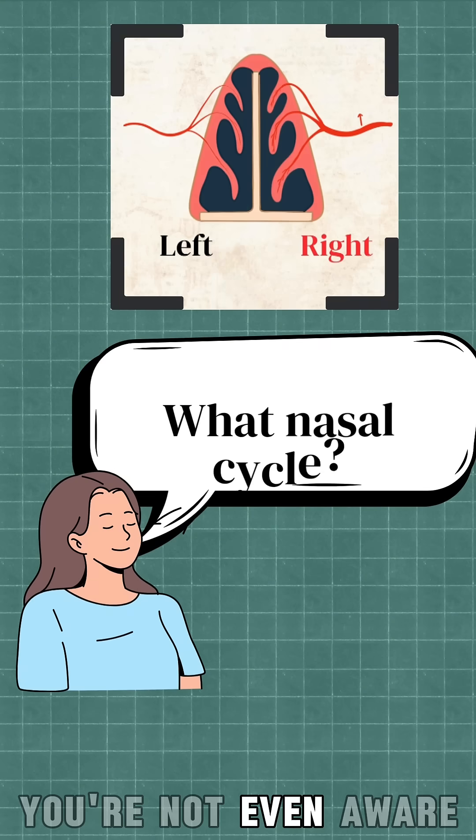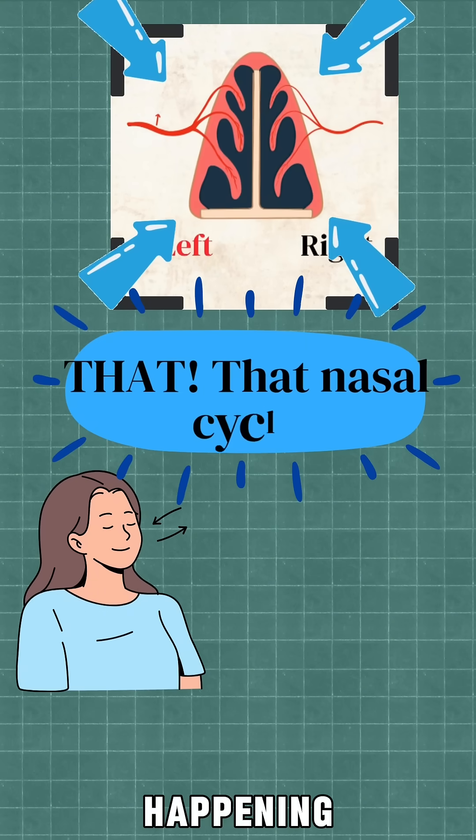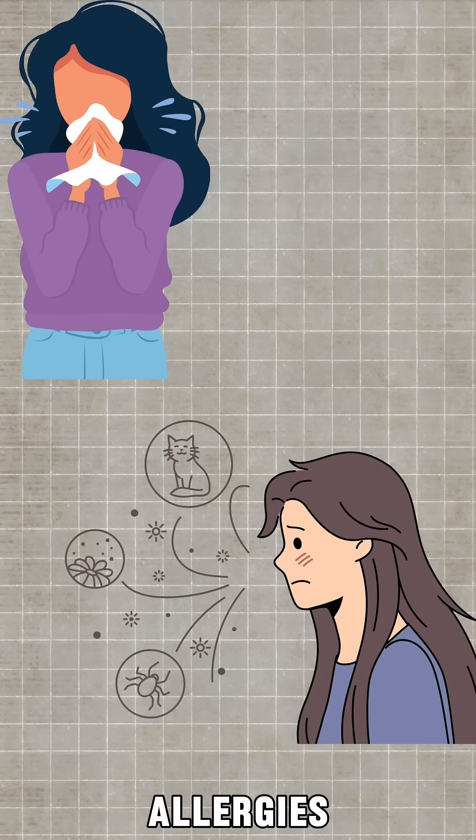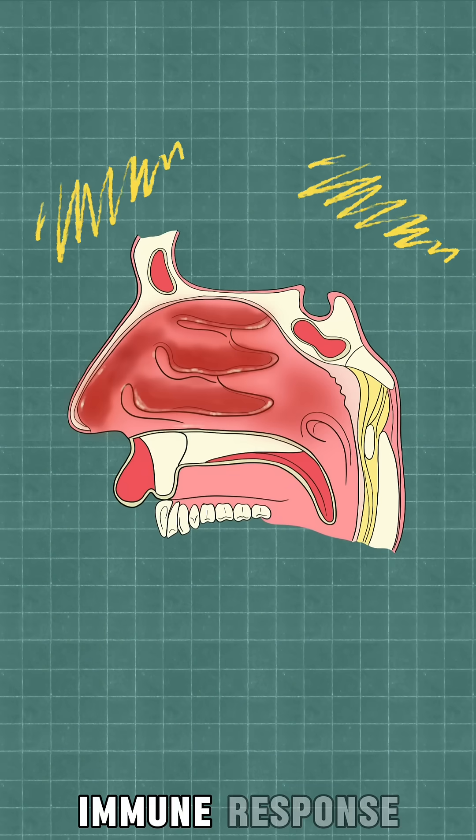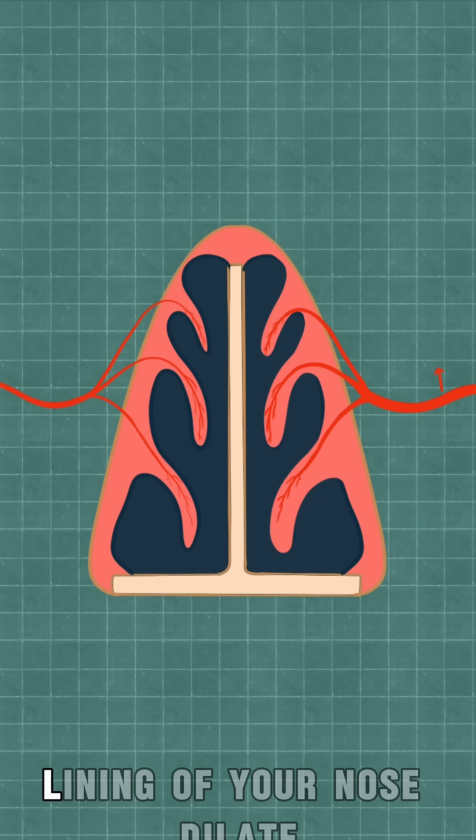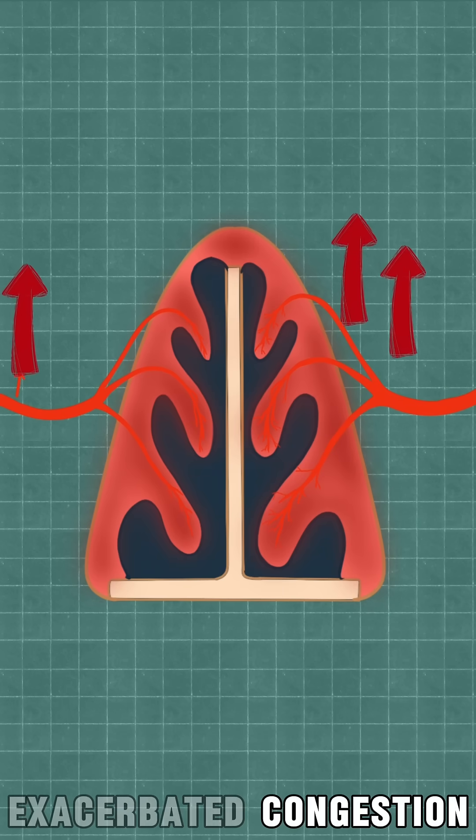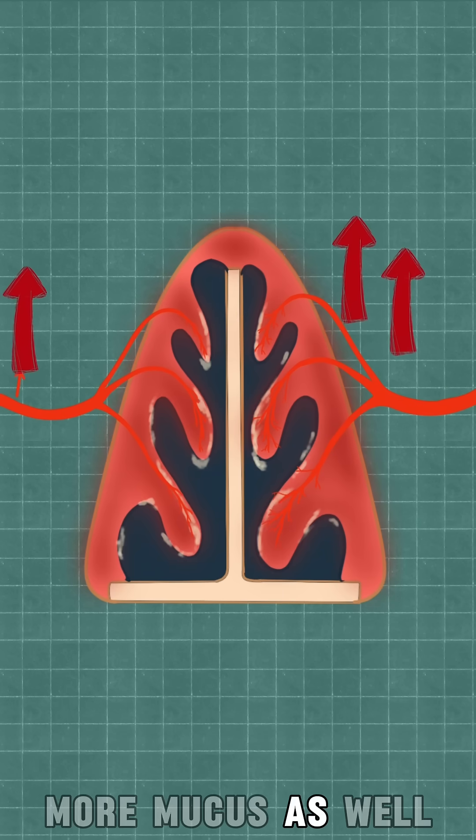Normally you're not even aware of the nasal cycle happening, but when you have a cold or allergies, your nasal tissues become inflamed due to an immune response. The blood vessels in the lining of your nose dilate, resulting in exacerbated congestion, and you produce more mucus as well.